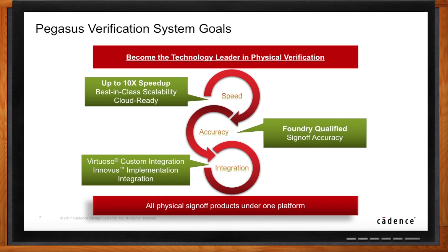One advantage is that PVS decks — our previous generation — are already enabled for all foundries and all nodes. Even though Pegasus is a brand new tool, it uses the old decks, meaning we don't have to redo full enablement. It also has to be sign-off accurate — you don't have a DRC tool if you're not accurate. And the last point is integration into our platforms: Virtuoso and the Innovus Digital Implementation System, which puts us in a really sweet spot versus the competition.